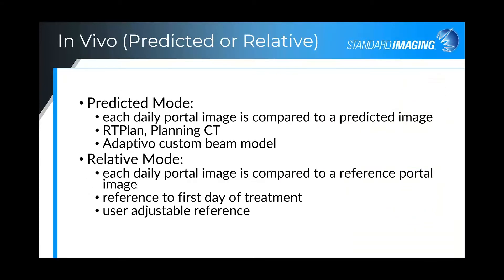With the in vivo module, one can do the comparison either in predicted mode or in relative mode. In predicted mode, with each daily portal image we compare to a predicted image. This predicted image is generated based on the RT plan, planning CT, and other components from the treatment planning system, and predicted using a custom beam model.